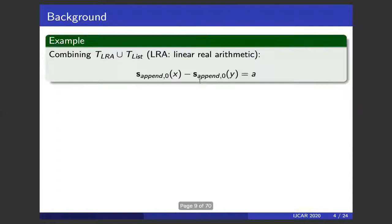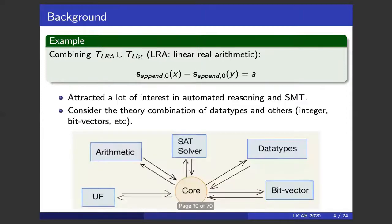Now let's go to theory combination. Consider a formula containing s-append-0(x) and s-append-0(y) — selected terms from the theory of list — while the minus operator comes from the theory of linear real arithmetic. This formula combines two theories. Theory combination attracts significant interest in automated reasoning and SMT, a framework working over many theories. For example, consider combining data types and bit vectors: the SMT core coordinates between the data type solver and the bit vector solver.